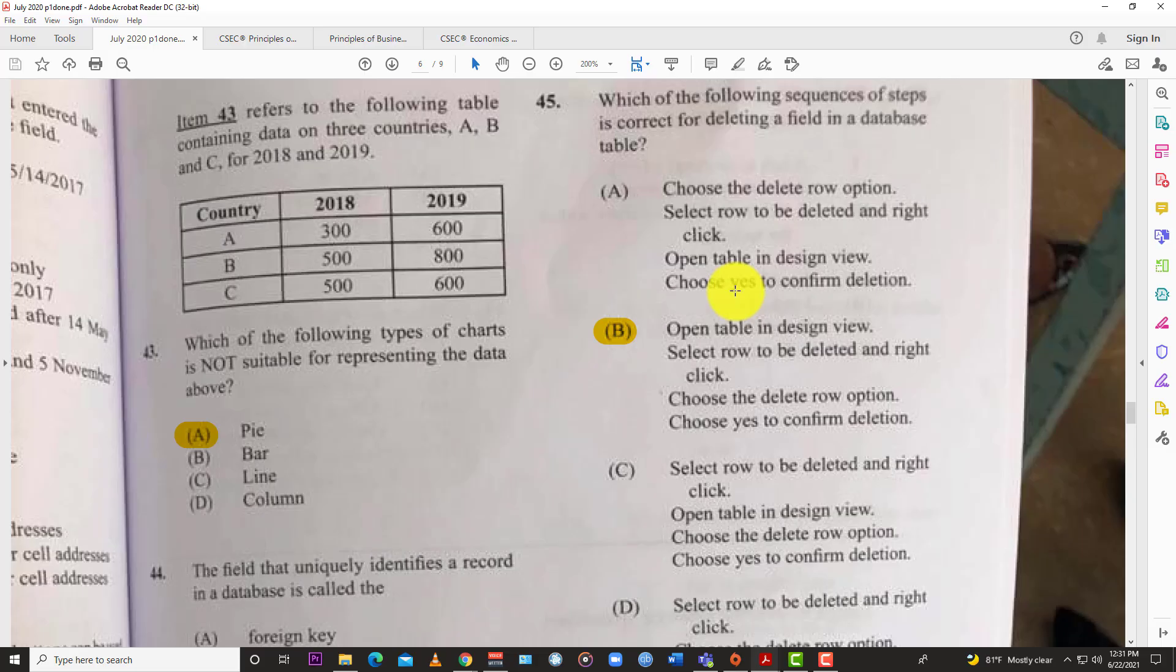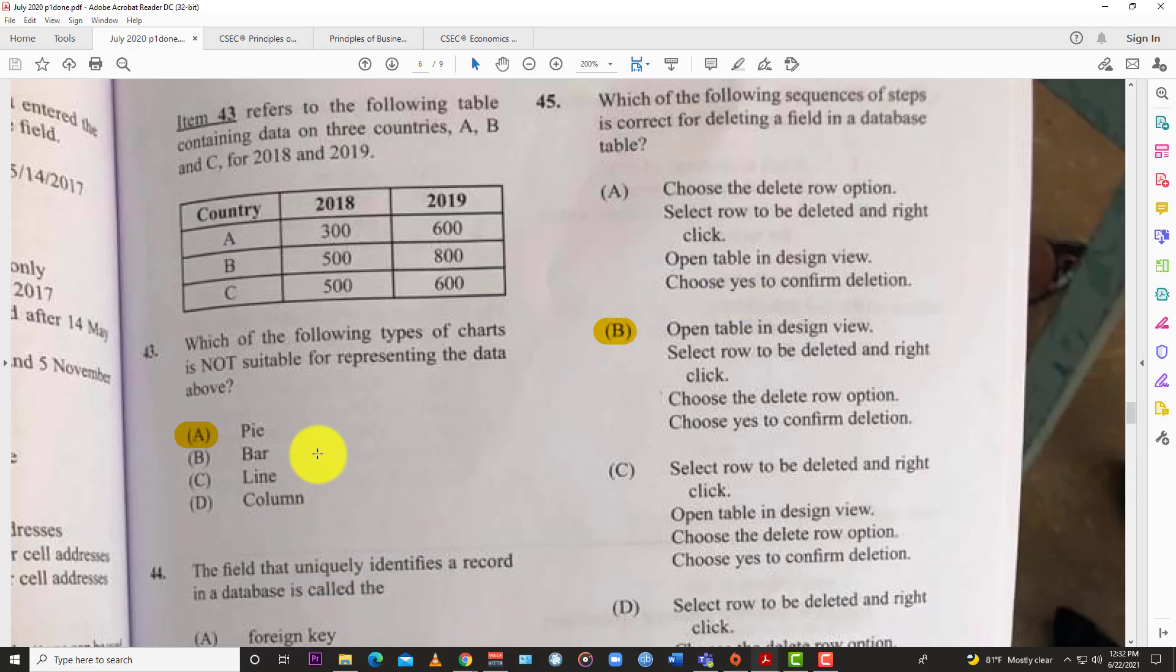Question 43 refers to the following table containing data on three countries A, B, C for 2018 and 2019. Which of the following types of charts is not suitable for representing the data above? The best answer here is a pie chart, right? A pie chart is not going to give you the intricacies of what you want. You cannot really compare because it's two years with different inputs. The bar would show the different years and lengths, and line and column would do the same thing. So the best answer is A, which is not suitable.